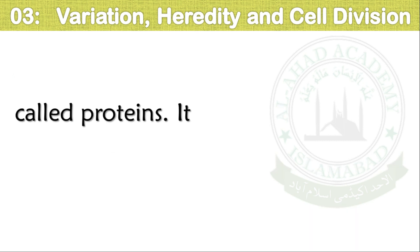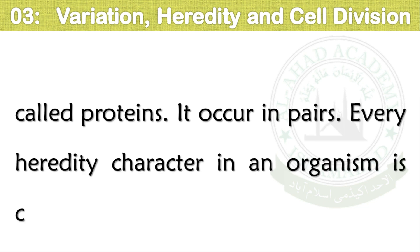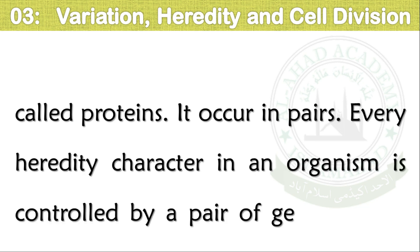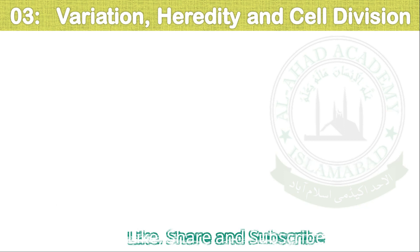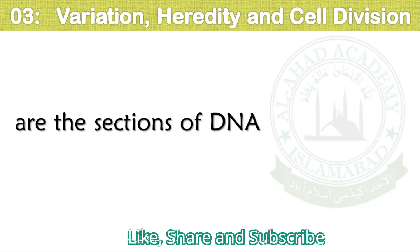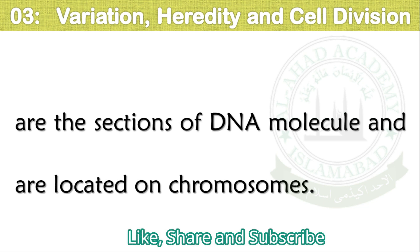Genes make proteins. They occur in pairs — every hereditary character in an organism is controlled by a pair of genes. Genes are the sections of a DNA molecule and are located on chromosomes.